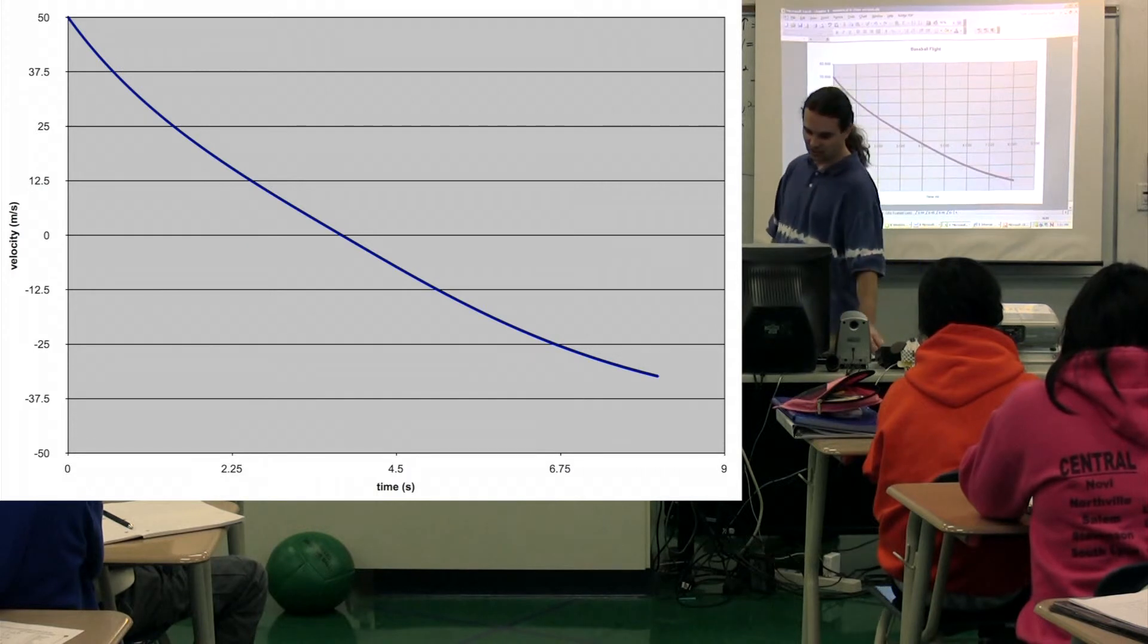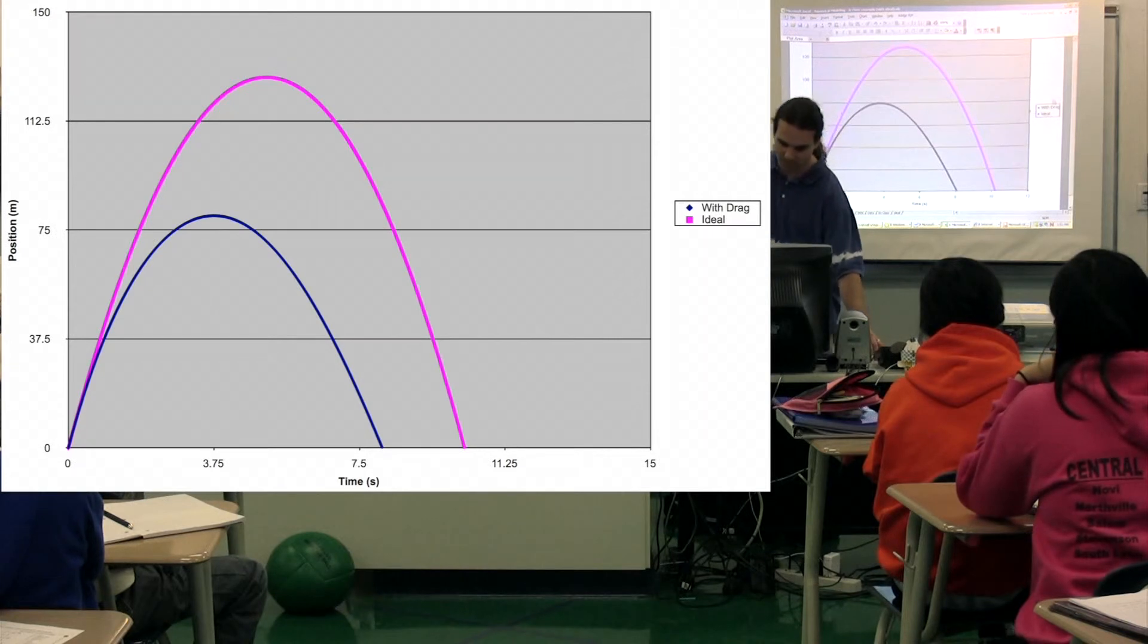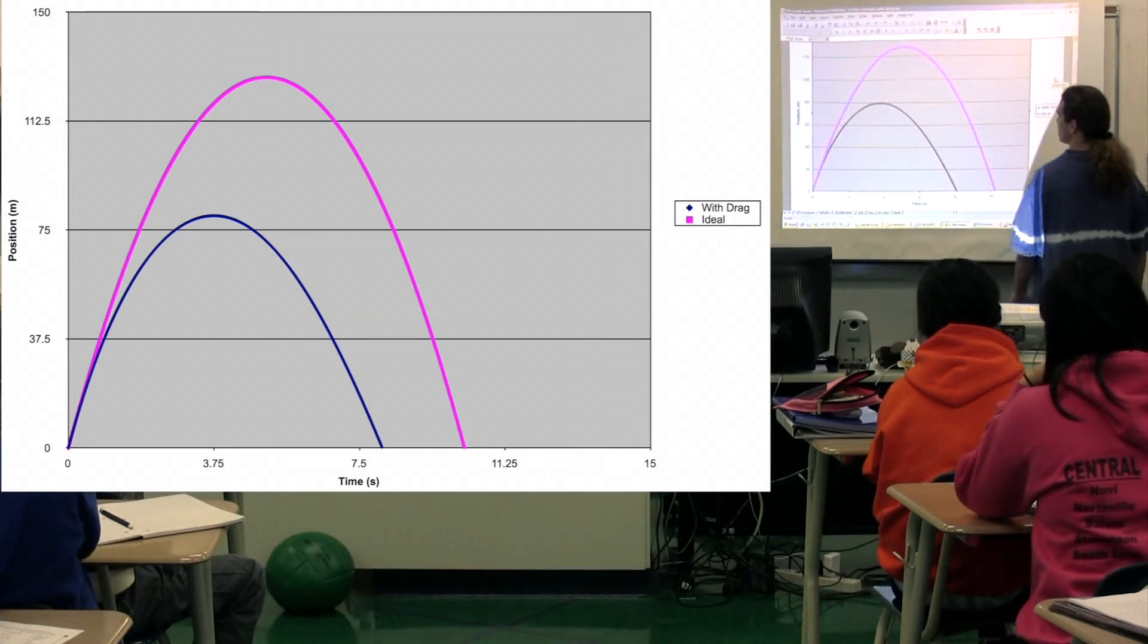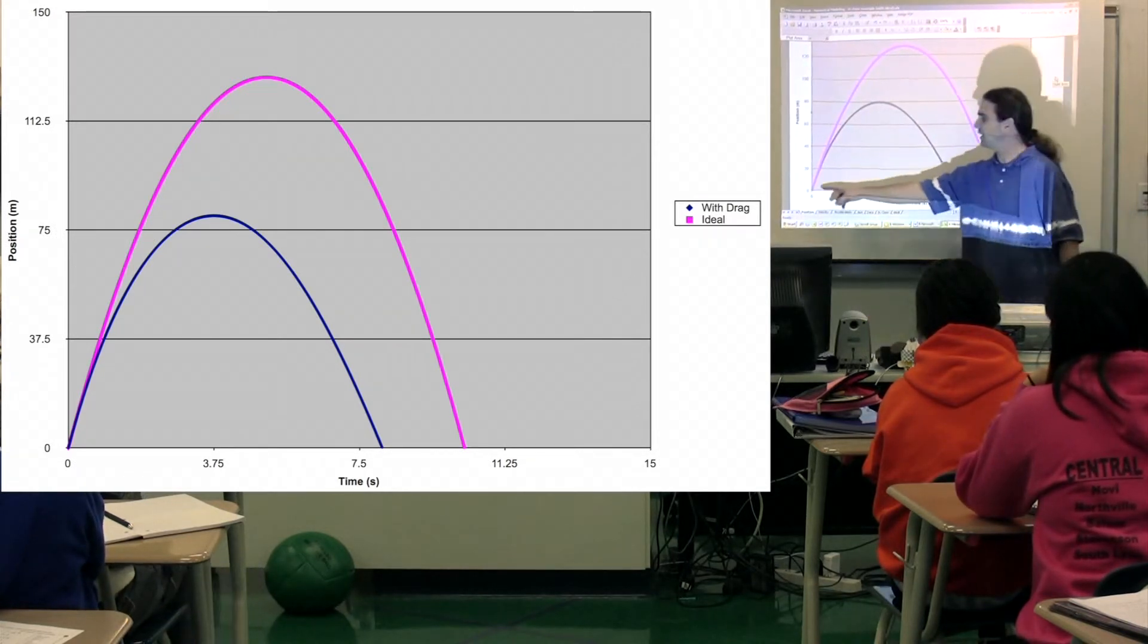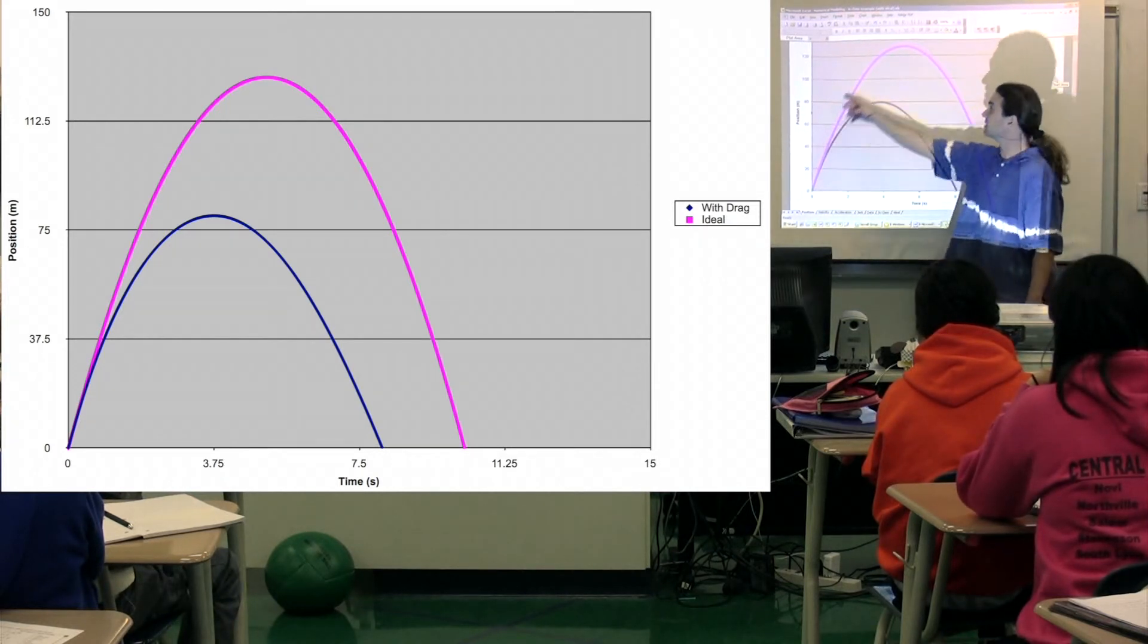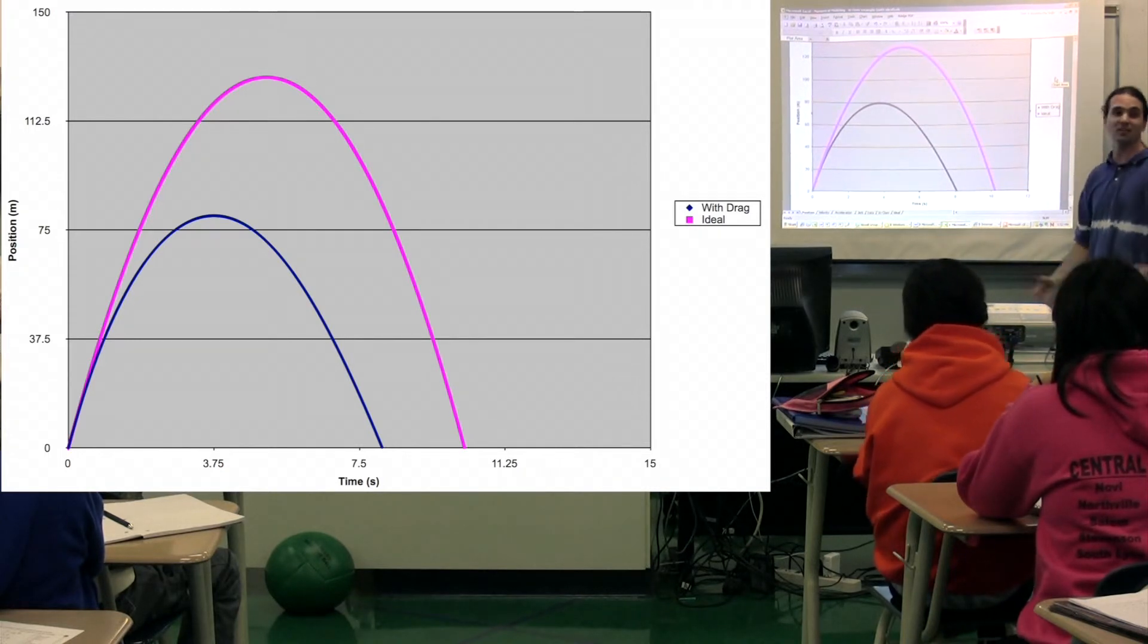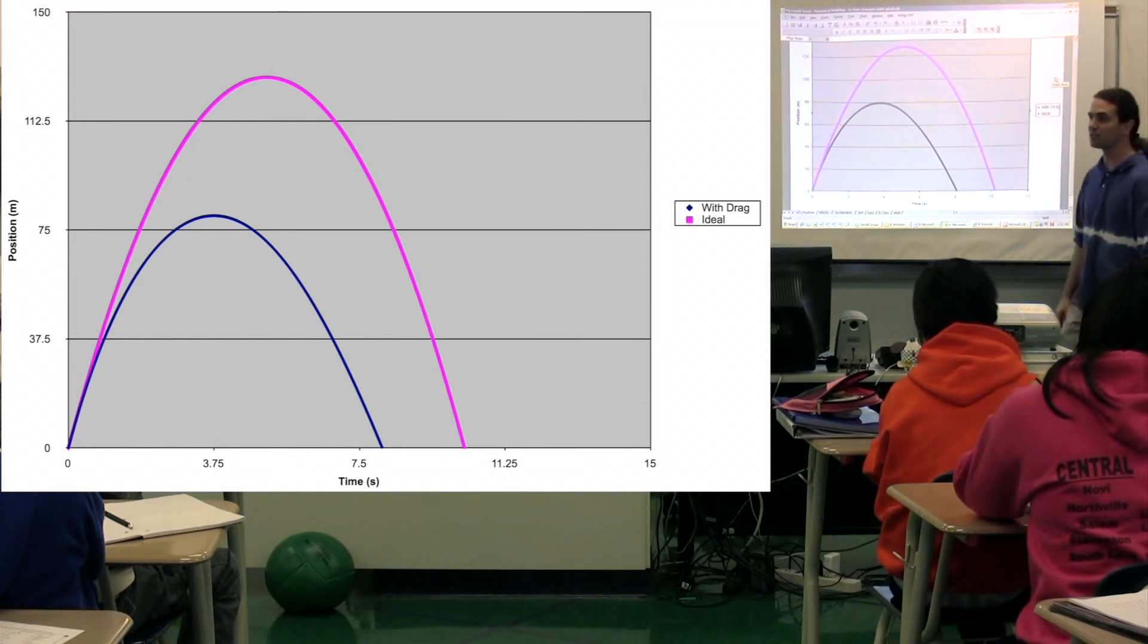So we can actually look at and compare this with ideal data. For example, this is the position as a function of time if you have air drag. This is the position as a function of time if you don't. It's actually in the air more than two seconds longer if you don't account for air resistance.